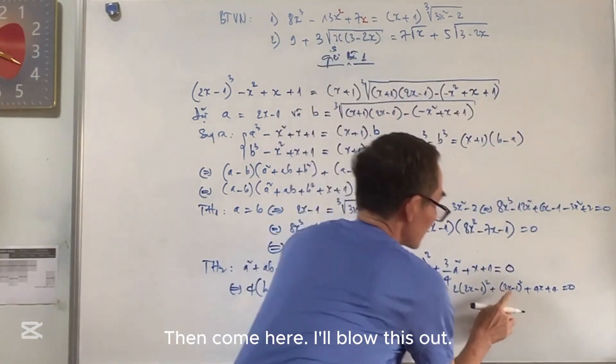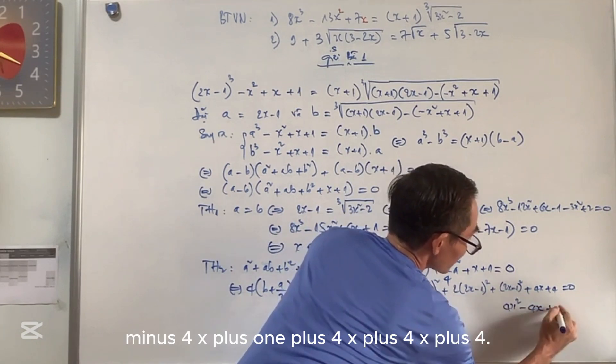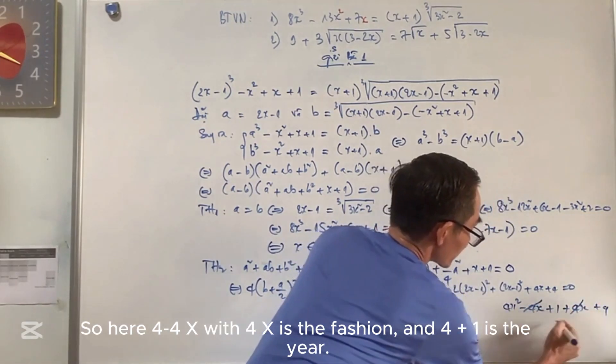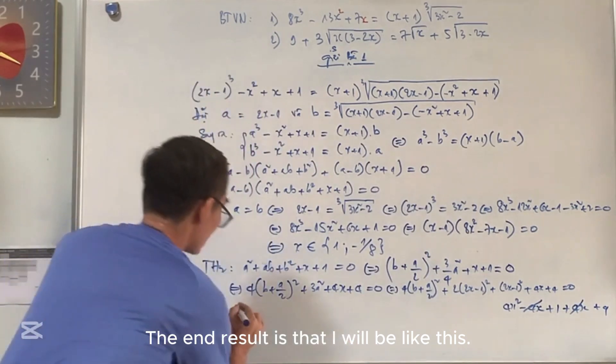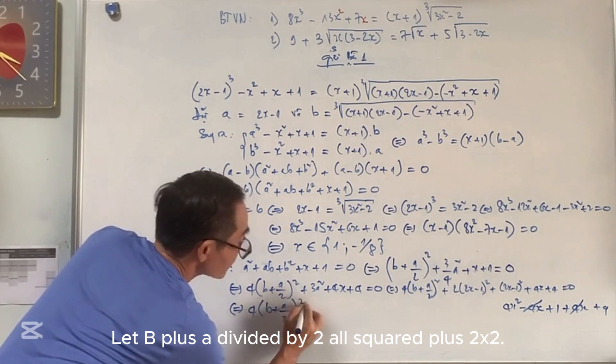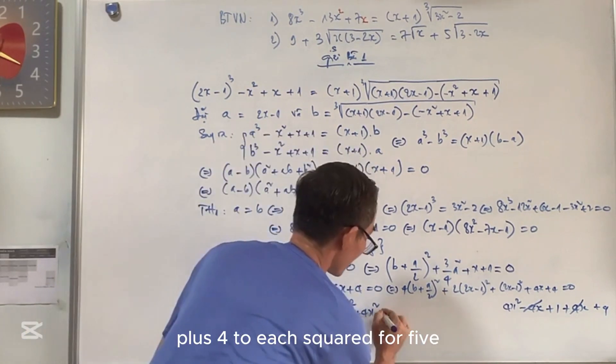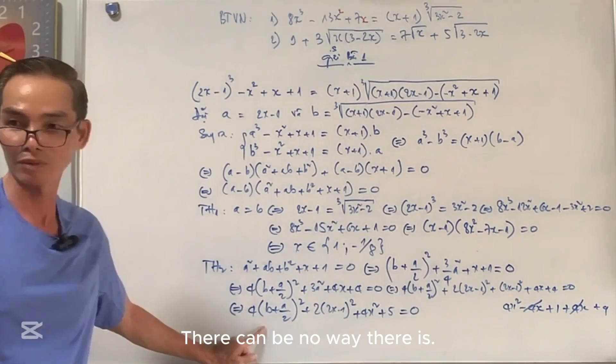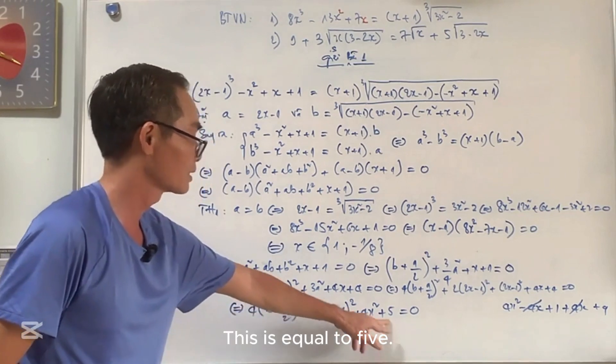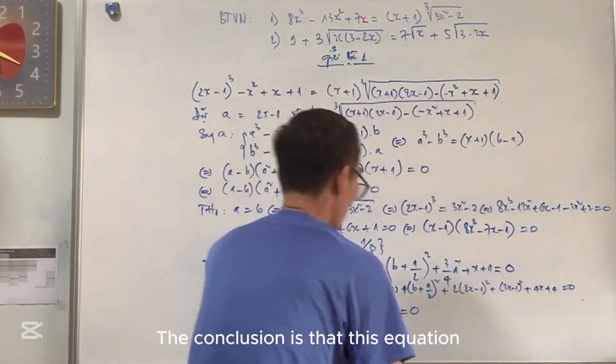You should pass this 1 over to the side. If you interact with this 4x plus 4, what's it going to do? I'm going to transform like this. 4 times 2 times 2x minus 1 all squared plus 2x minus 1 all squared plus 4x plus 4 equals 0. Then come here. I'll blow this out. If you open this, you get 4x squared minus 4x plus 1 plus 4x plus 4x plus 4. So here 4 times 4x with 4x is the same. And 4 plus 1 is 5. Then, the end result is that I will be like this. That's equivalent to 4 times b plus a/2 all squared plus 2 times 2x minus 1 all squared plus 5 equals 0. This equation has no solution. There can be no way there is. This is not as big as this. This is as big as 0. This equals 5. So this whole thing must be bigger or equal to 5. So it can't be 0. It can't be otherwise.